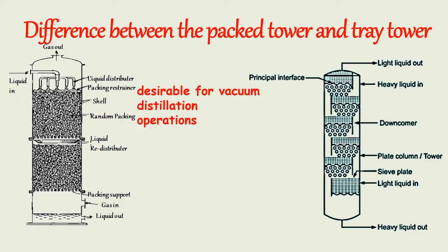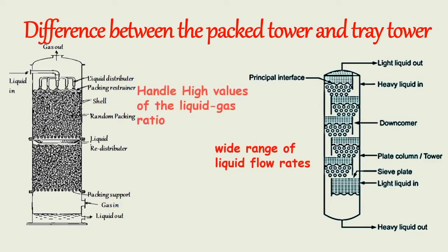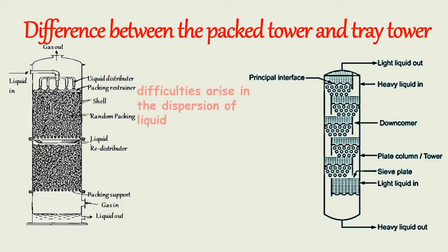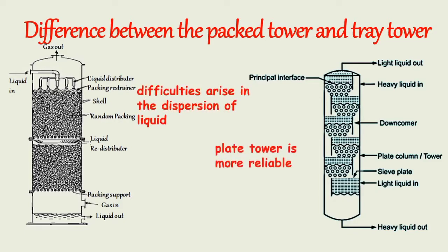Plate columns operate over a wide range of liquid flow rates without flooding. High values of liquid-gas ratio are best handled in packed towers. In a packed tower, difficulties arise in the dispersion of liquid, hence a plate tower is more reliable and needs fewer safety factors at low liquid-to-gas mass velocity ratios.